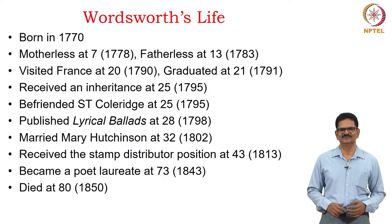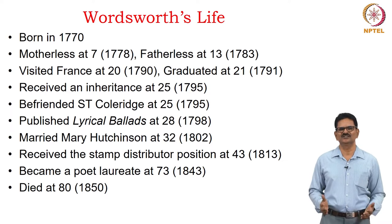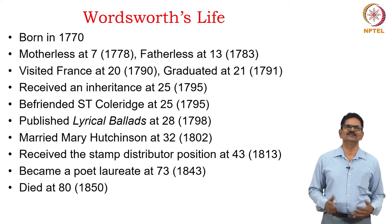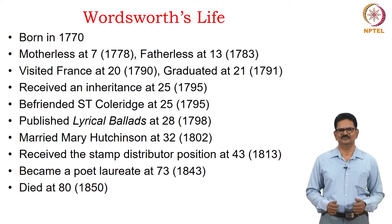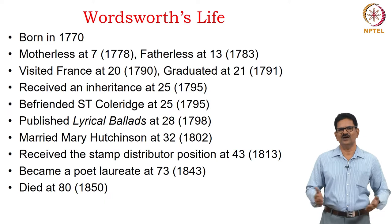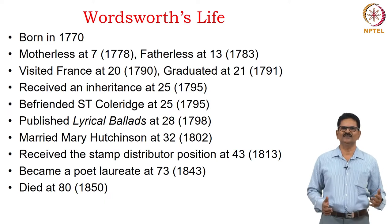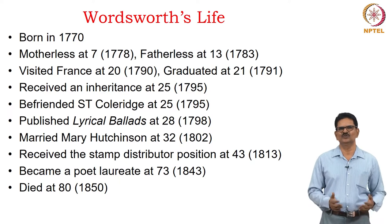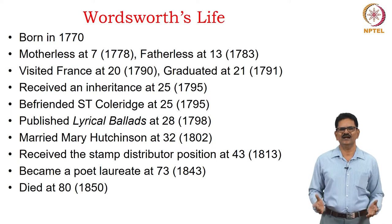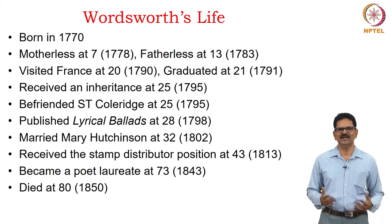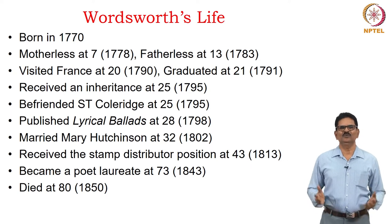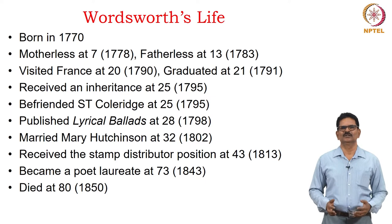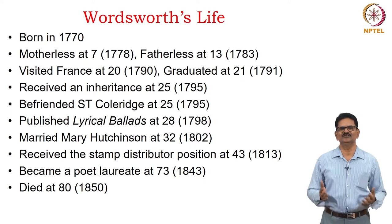Wordsworth's life is beautiful and contributed to the great Romantic Movement in literature. He was born in 1770, lost his mother at seven and his father at thirteen, becoming an orphan. He visited France at twenty and graduated from university at twenty-one. At twenty-five, an inheritance from a friend allowed him to support himself, and he formed a precious friendship with Samuel Taylor Coleridge in 1795, significant in the history of English literature.